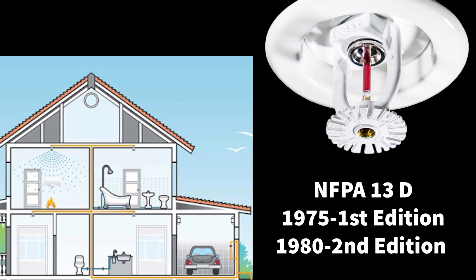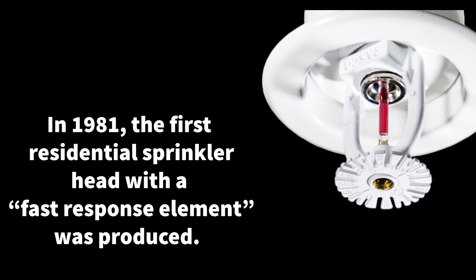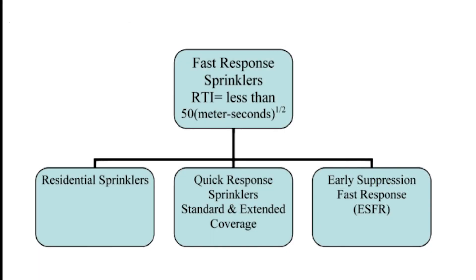The need for fire sprinklers in residential occupancies sparked the innovation for creating a faster responding head — preventing flashover and protecting life safety was the number one goal. The residential sprinkler head was the birth of the fast response element. In 1981, the first residential sprinkler head with a fast response element was produced. The benefits eventually made their way into the commercial head, creating a fast response category with an RTI of less than 50 — which includes the residential sprinkler, quick response standard spray, extended coverage, and the early suppression fast response (ESFR).